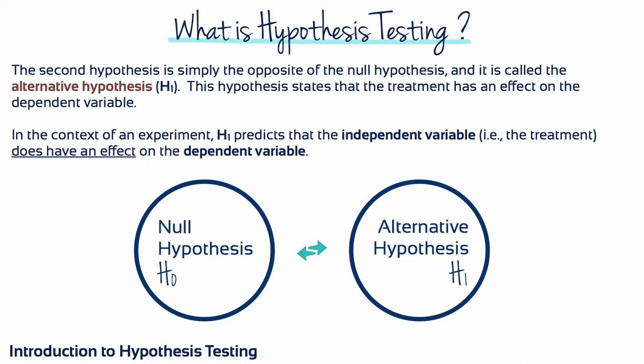It may seem awkward that the null hypothesis is first and most important. After all, the purpose of most experiments is to show that a treatment does have an effect, and the null hypothesis states that there is no effect. The reason for focusing on the null hypothesis is that logically, it's much easier to demonstrate that a population hypothesis is false than to demonstrate that it's true.